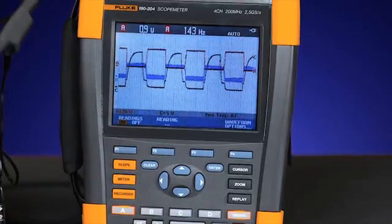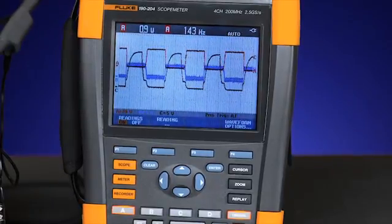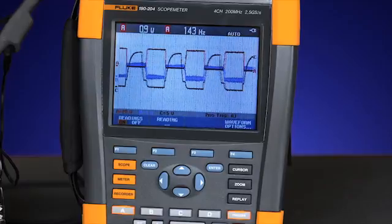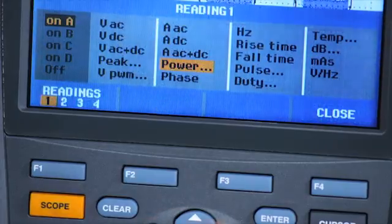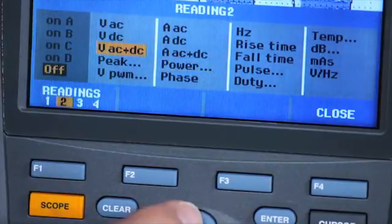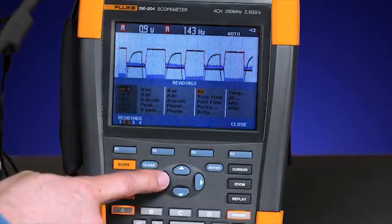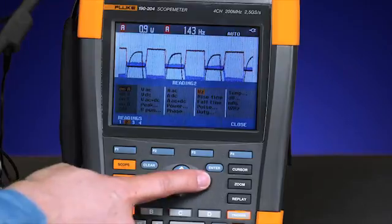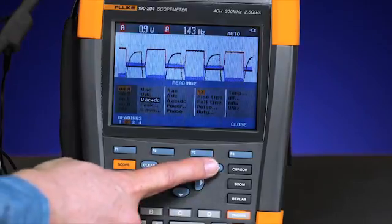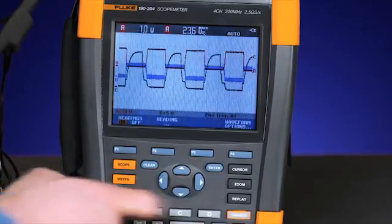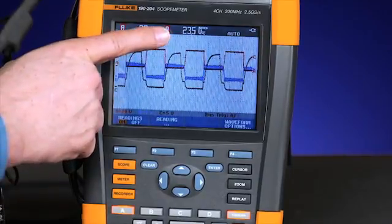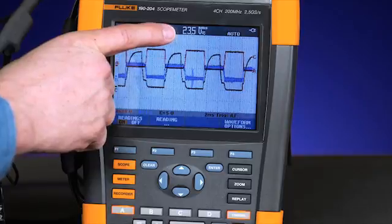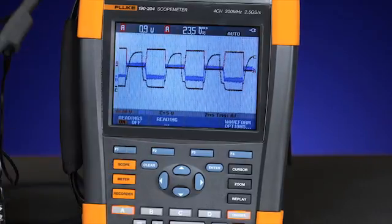The next measurement will measure the voltage on input A. Select reading 2, measuring on input A, then choose voltage AC plus DC across input A. You can see the second measurement on input A shows 23.5 volts RMS.